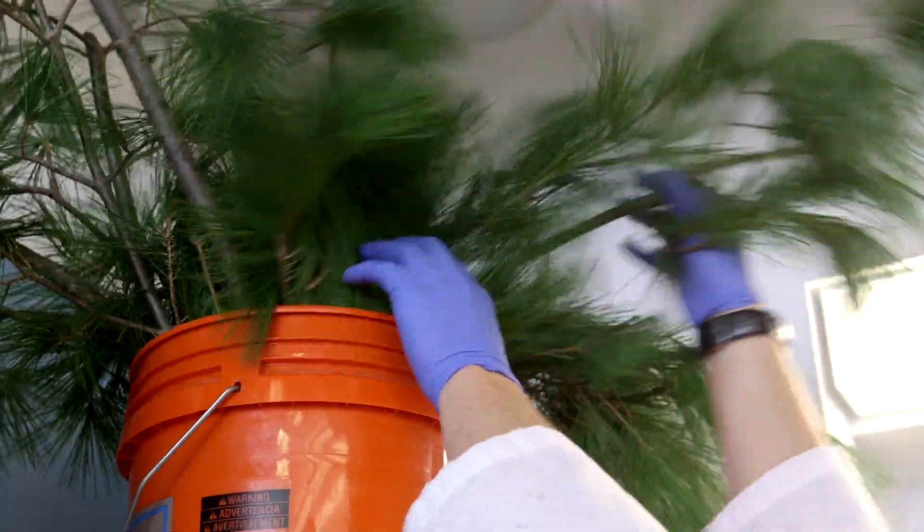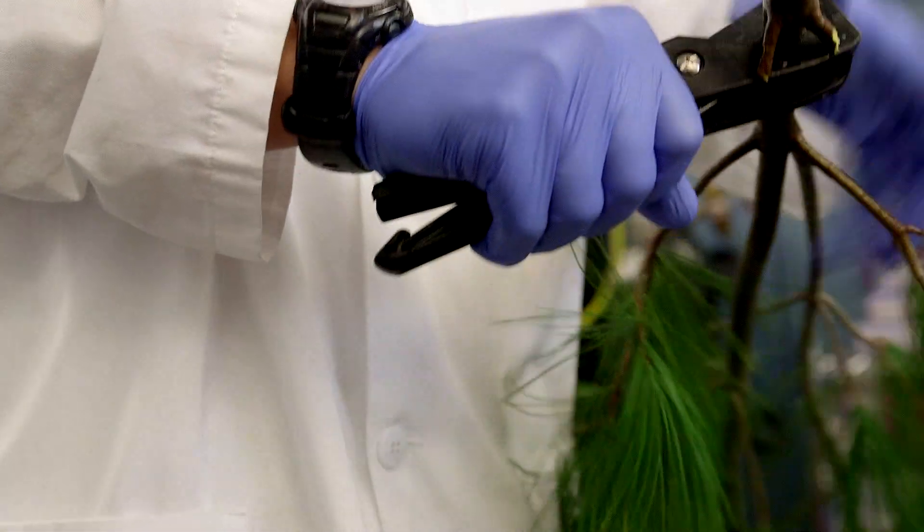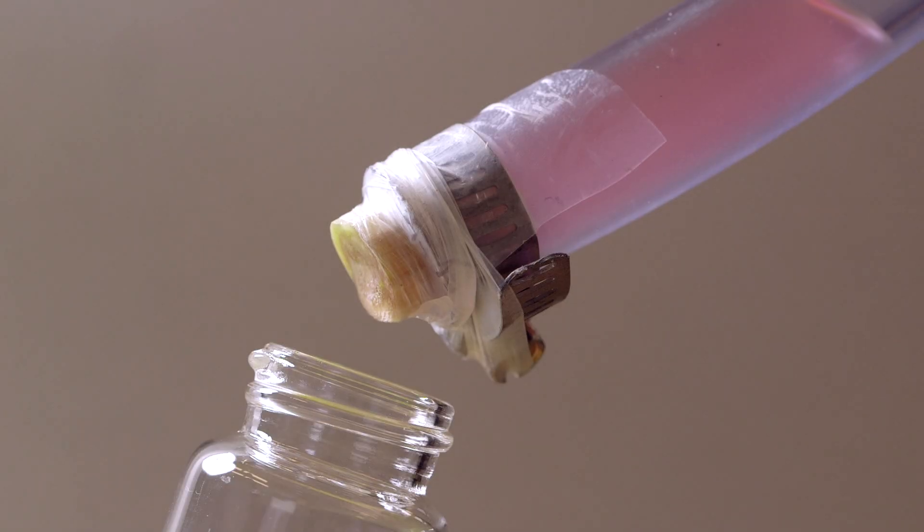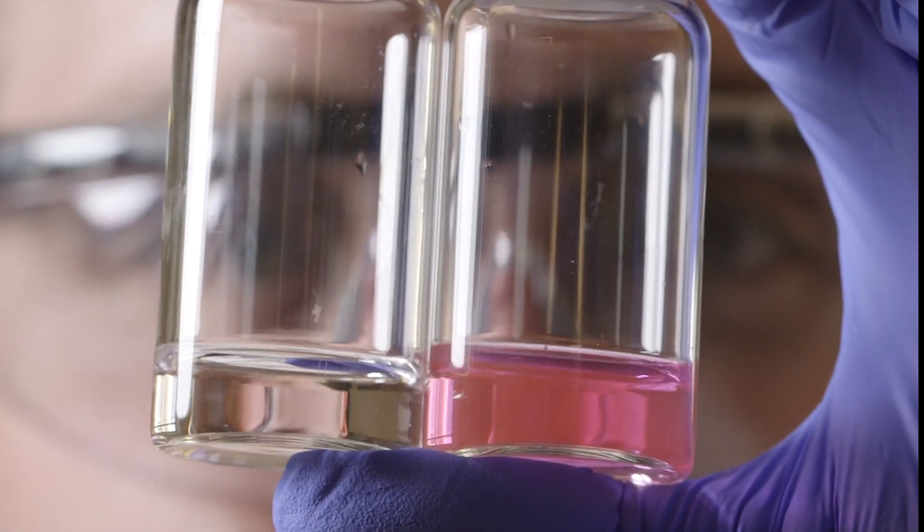We prepared our filter by simply taking a branch from a pine tree and cutting off a small section. We took this branch, mounted in a tube. We flowed water which was contaminated with bacteria. And we found that this simple filter could remove 99.99% of the bacteria from the water.